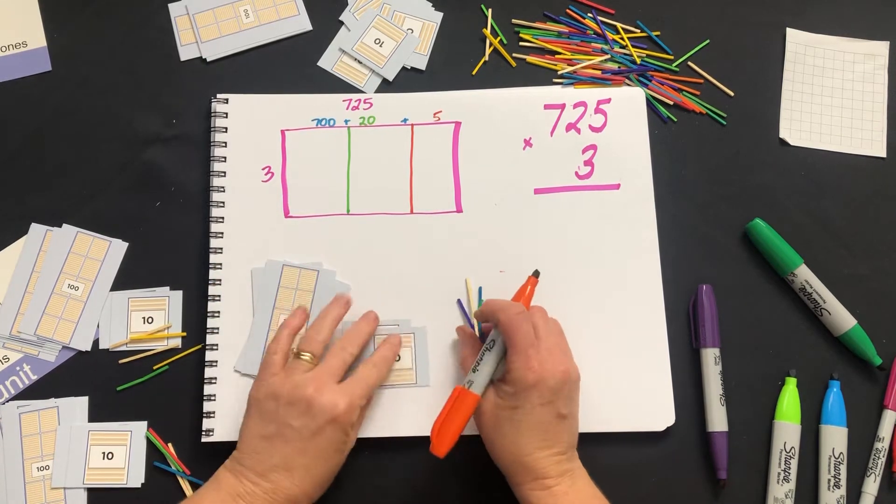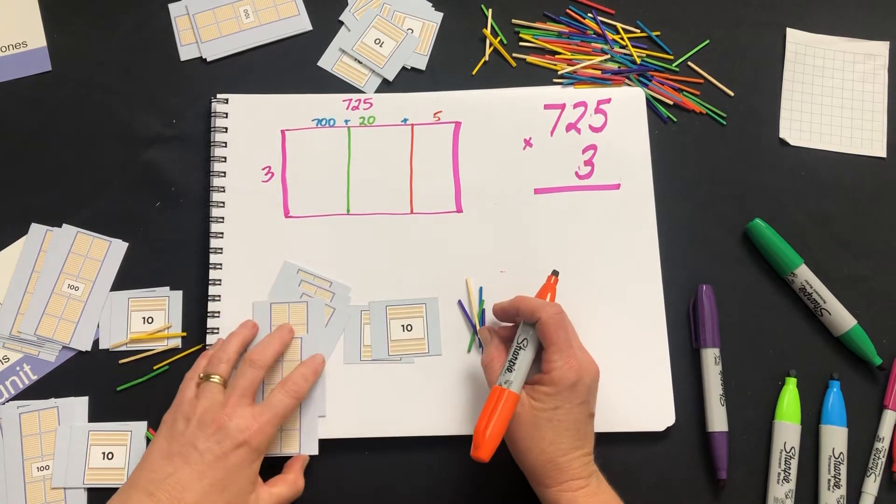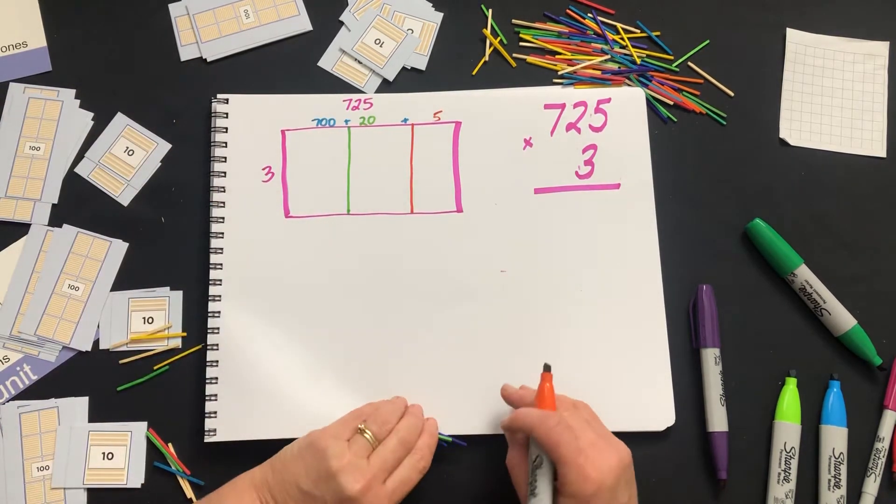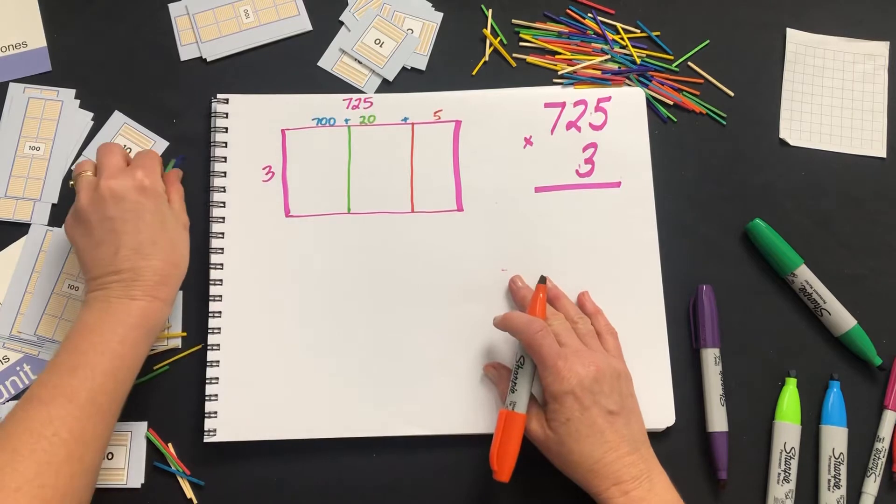So we've got 5 ones, 2 tens, and 7 hundreds. That's why it's good to use the cards to visualize it and go back to if the student needs it.